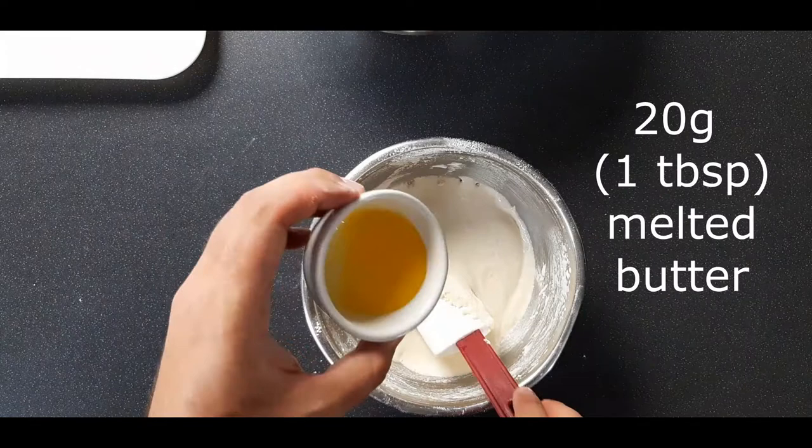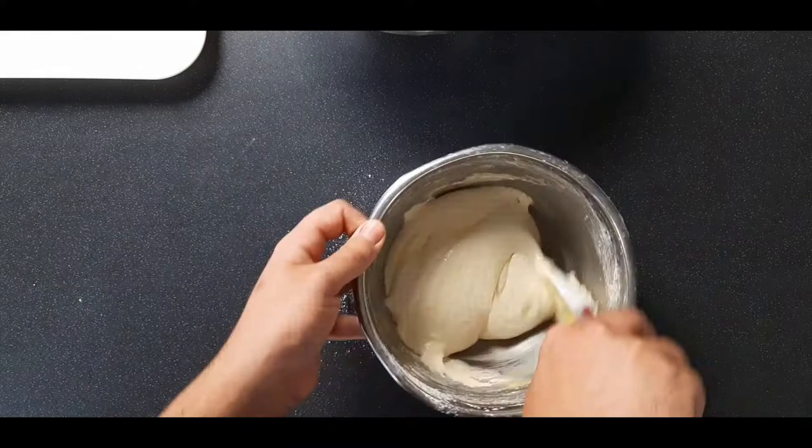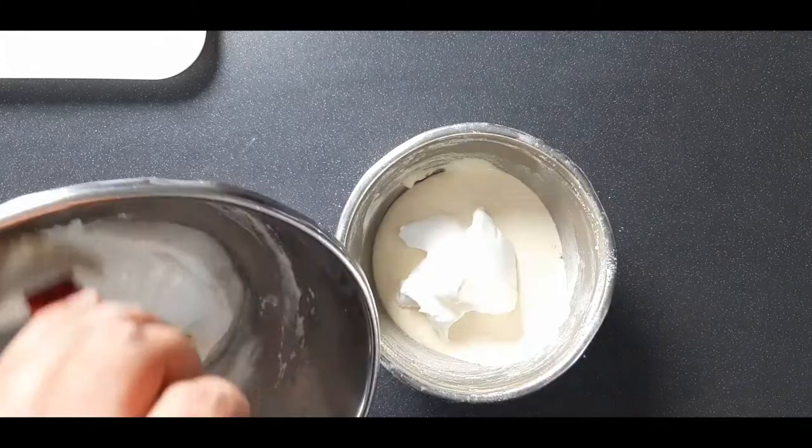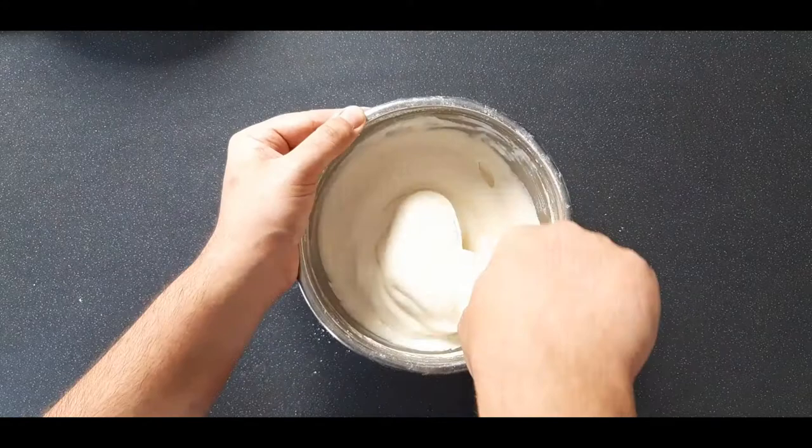Now we're going to add to that 20 grams or one tablespoon of melted butter and fold that in, making sure that we have folded it all in. Next up, we're going to start folding in our meringue into our sabayon. Just be careful again here, don't over-fold. You'll find that all your mixture loses aeration and then it's going to be a dense sponge rather than a light aerated sponge.